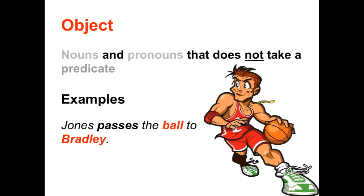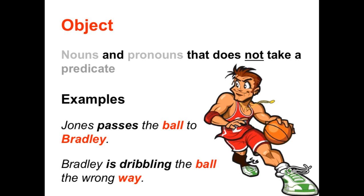Let's take a look at another sentence. 'Bradley is dribbling the ball the wrong way.' The predicate in this sentence is the verb phrase 'is dribbling.' We ask ourselves, who or what is dribbling? And the answer is Bradley. So in this sentence, Bradley is the subject. But we still have two nouns — ball and way — and neither of these nouns are taking actions, which makes them objects.